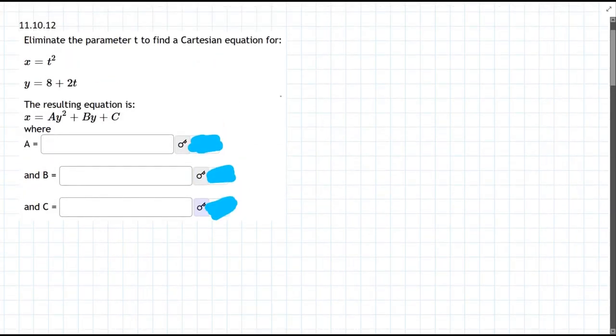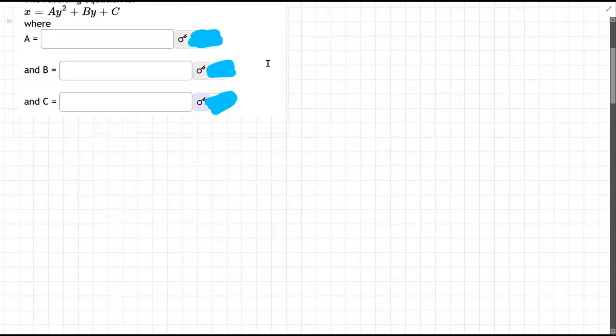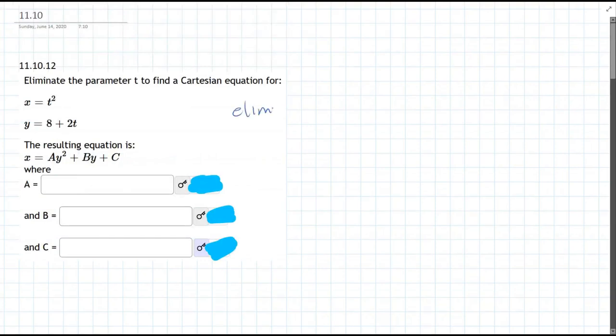There's two ways to do it. You can solve for t in one equation and plug it into the other, which is what we're gonna do. So what we're gonna do is called elimination. Or substitution.